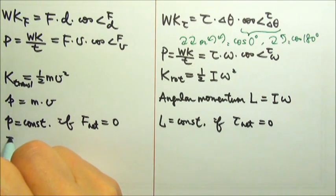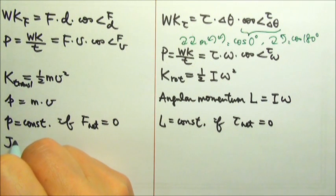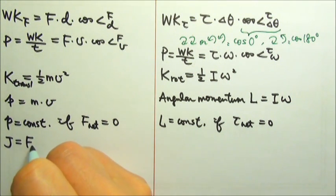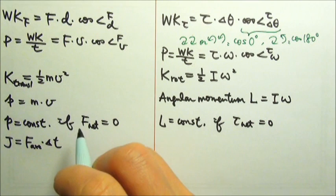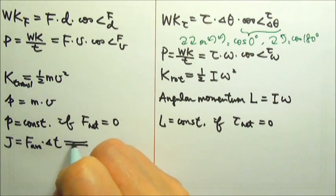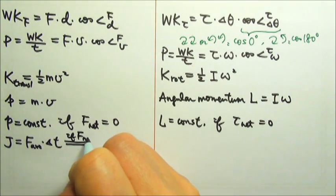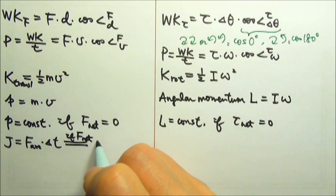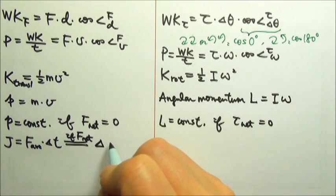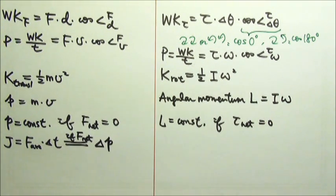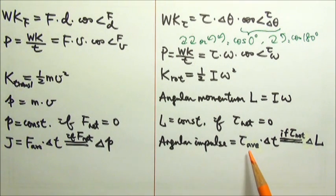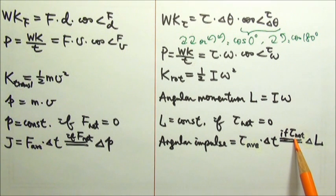And we also learned about impulse. Impulse, by definition, is the average force times time. And if we're looking at the impulse by the net force, then the impulse also equals to changing momentum. Angular impulse is the average torque times time. And if we're looking at the net torque, then the angular impulse produced by the net torque would equal to the change in angular momentum.